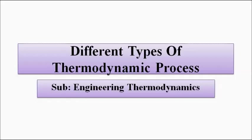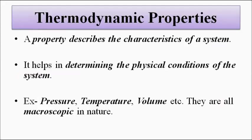In the previous video we discussed about thermodynamic process. When we discuss thermodynamic process, the important thing which comes into play is thermodynamic properties. Thermodynamic properties describe the characteristic features of a system and define the physical conditions of the system. The important thermodynamic properties are pressure, temperature, and volume, and the different types of thermodynamic process are also defined in terms of these three parameters.